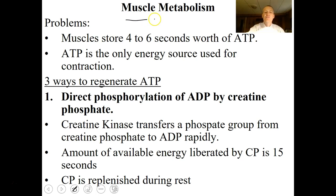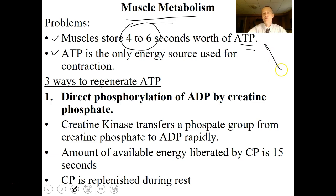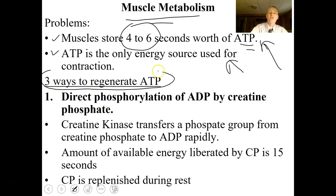There are a few problems with muscle metabolism. Muscle cells store only about 4 to 6 seconds worth of ATP, yet ATP is the only energy source used for muscle contraction. Since we can contract muscles longer than that, there are three ways to ensure we have enough ATP beyond that initial stored supply.